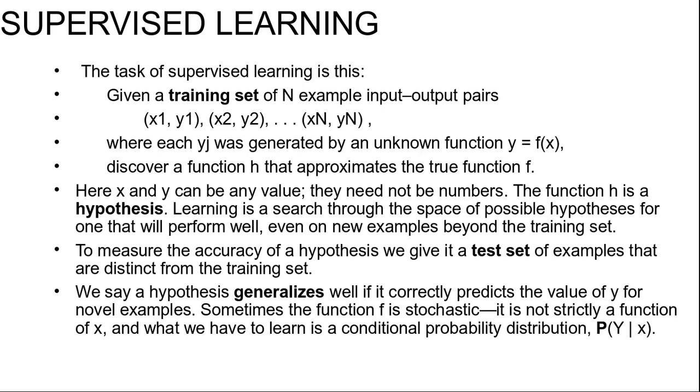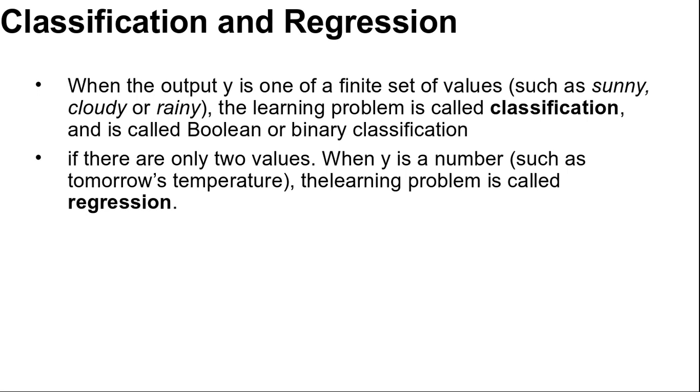When the output y is one of a finite set of values such as sunny, cloudy, or rainy, the learning problem is called classification. It is called Boolean or binary classification if there are only two values. When y is a number such as tomorrow's temperature, the learning problem is called regression. Technically, solving a regression problem is finding a conditional expectation or average value of y.